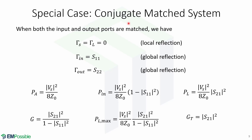Now we will take a look at the special case of a conjugate match system and its different parameters. When both the input and output ports are matched, the local reflection gamma S and gamma L equals zero. The global reflection gamma IN equals S11, and gamma OUT equals S22. The power available, PIN, PL, and gain G are given by their respective expressions. The maximum power delivered to the load and the transducer gain GT are also given by these expressions.